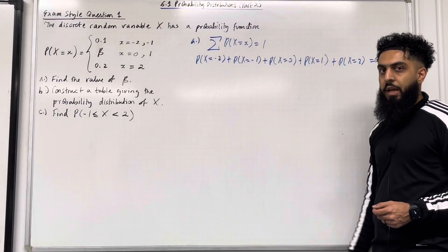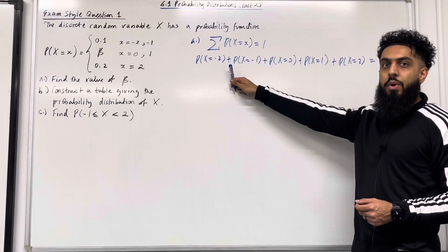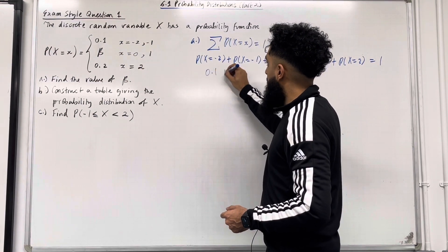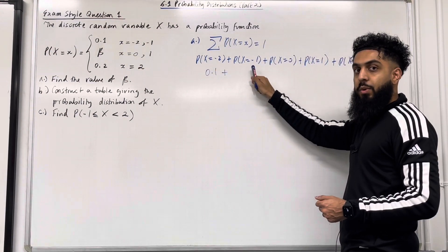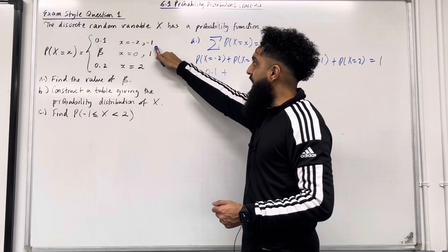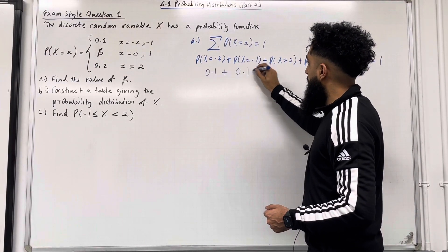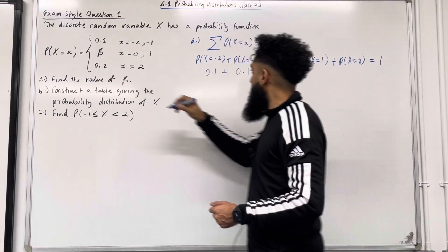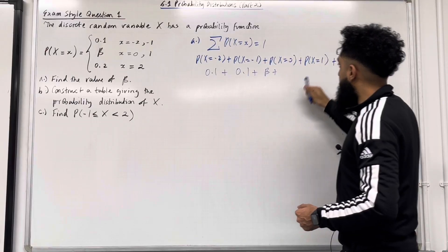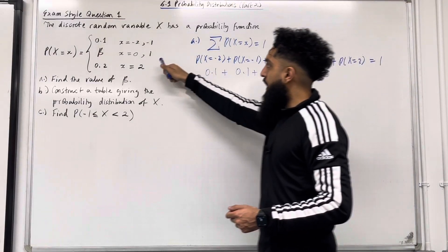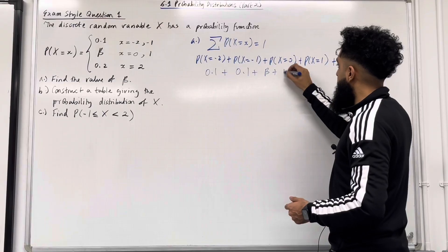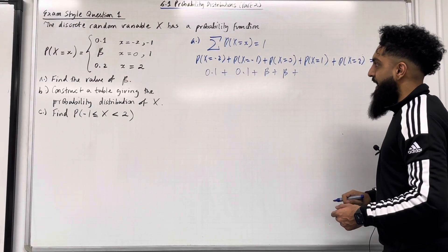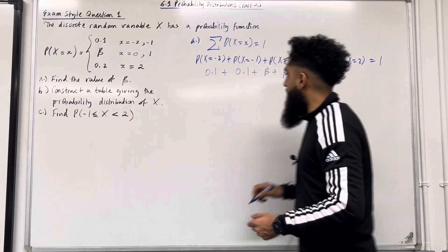This must equal 1. P(X = -2) is 0.1, plus P(X = -1) is also 0.1, plus P(X = 0) which is beta, plus P(X = 1) which is also beta, plus P(X = 2) which is 0.2.